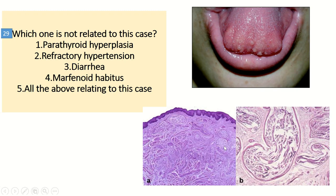These images are indicative of multiple mucosal neuromas seen in MEN2B. There are papules and nodules in the anterior of the tongue, and histopathology shows spindle cells in a fibrotic stroma, indicative of multiple mucosal neuromas. In MEN2B we have pheochromocytomas causing refractory hypertension, and medullary thyroid carcinoma causing diarrhea. These patients have a marfanoid habitus. Parathyroid hyperplasia is found in MEN1 and MEN2A — so the incorrect answer is 1.